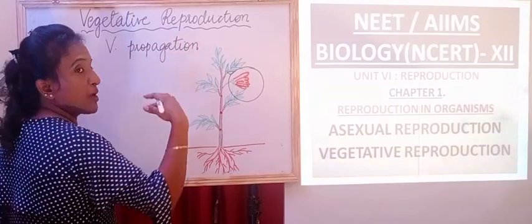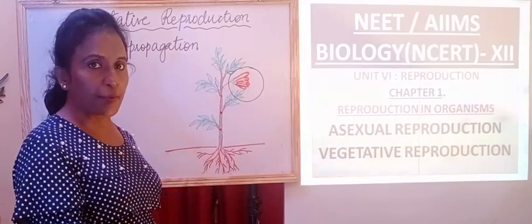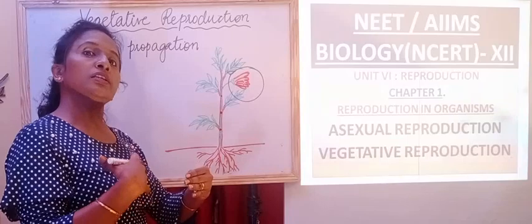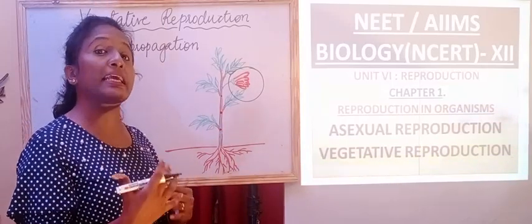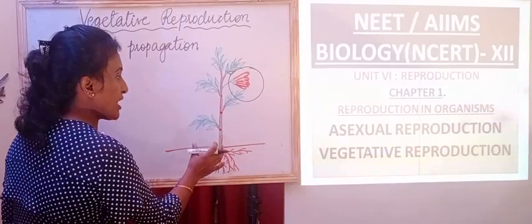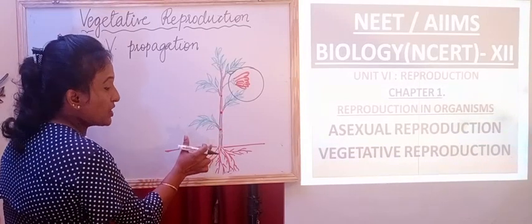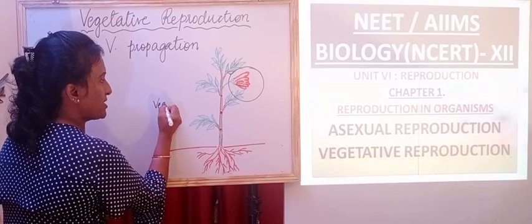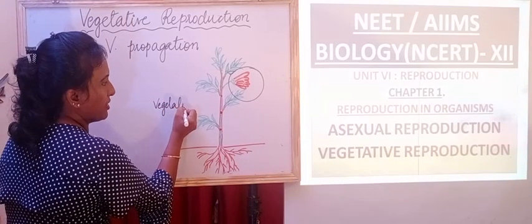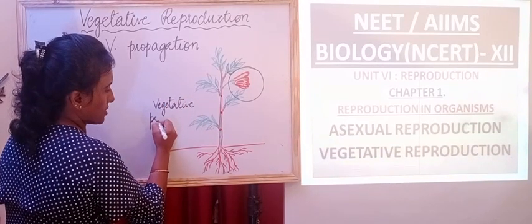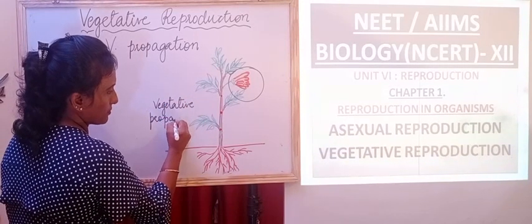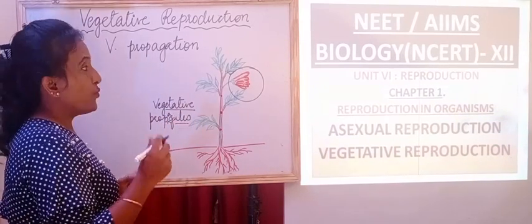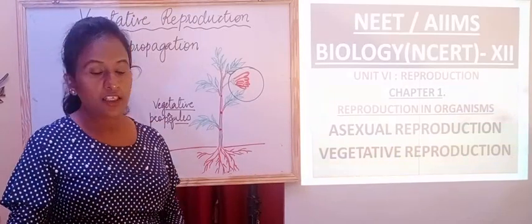Propagation means to propagate or to multiply. That means with the help of these vegetative parts, how the multiplication of these plants can be done asexually. What are the different parts? Those are roots, stem as well as leaves. These structures are called as vegetative propagules, which will help in vegetative reproduction.